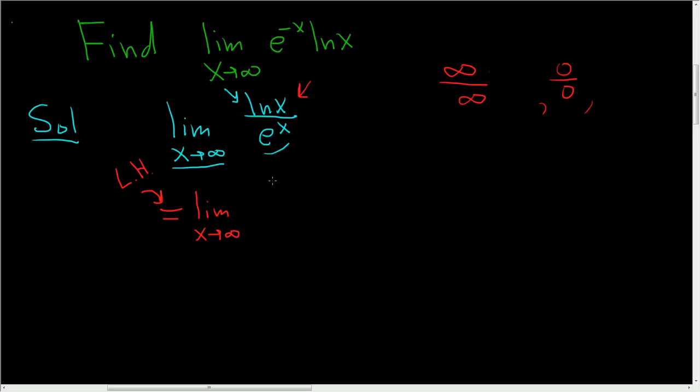So the derivative of the natural log of x is 1 over x, and the derivative of e to the x is e to the x.